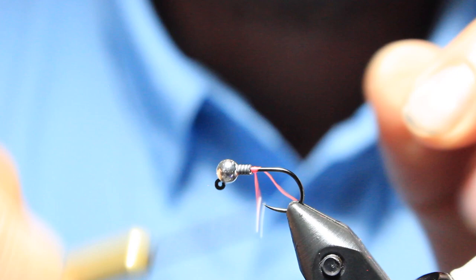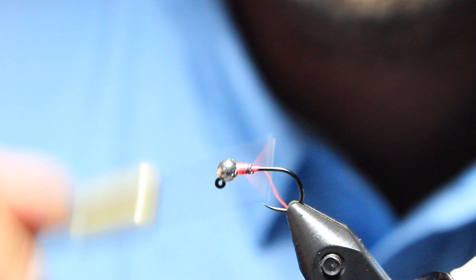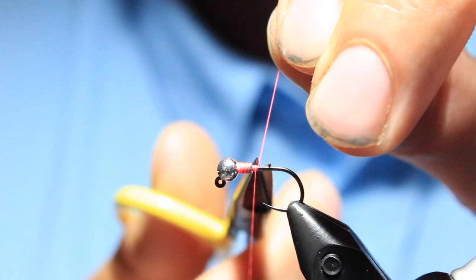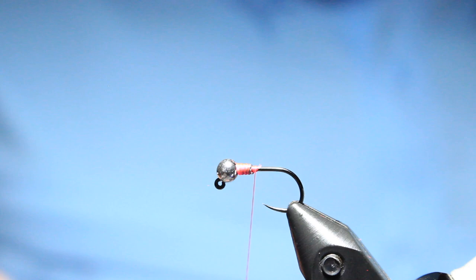This pattern, I like to use these size 12s as a point fly on a check rig. It's a great dropper. Here in northern New Mexico on the Rio Grande or over the border in Colorado, the currents are pretty complex, so I like a little bit heavier of a fly to get down through that.